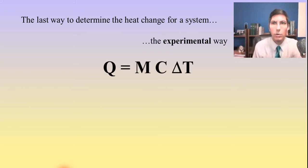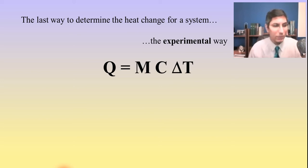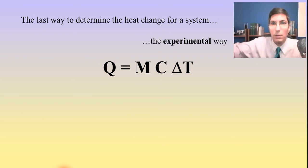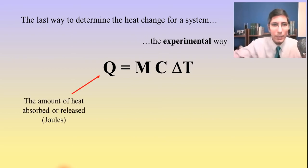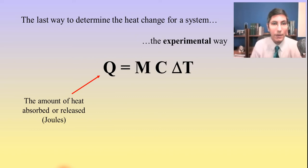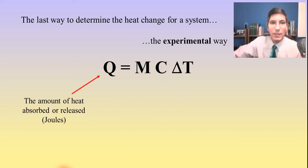We're using the equation Q equals MC delta T. You may have learned this in first year chemistry, but if not that's okay too because here we're going to learn how this works. Q is the amount of heat — thermal energy — that's been absorbed or released, and that's going to be calculated in joules, the SI unit of heat energy.